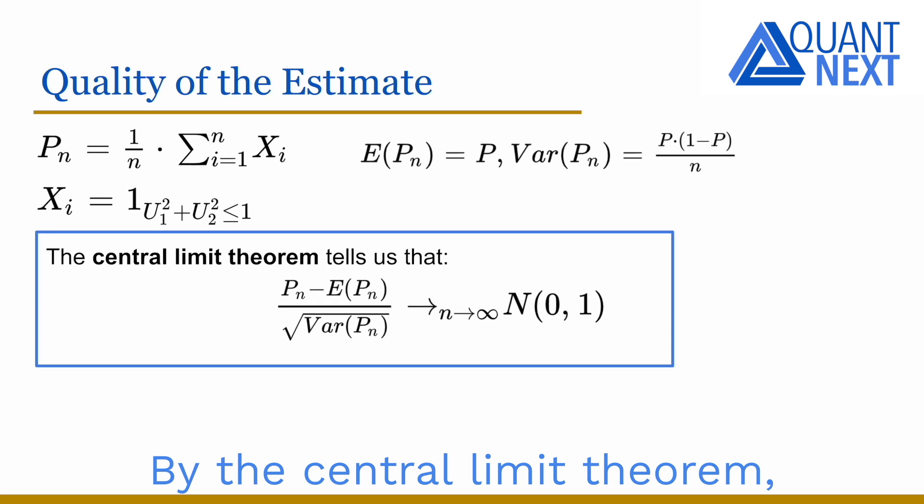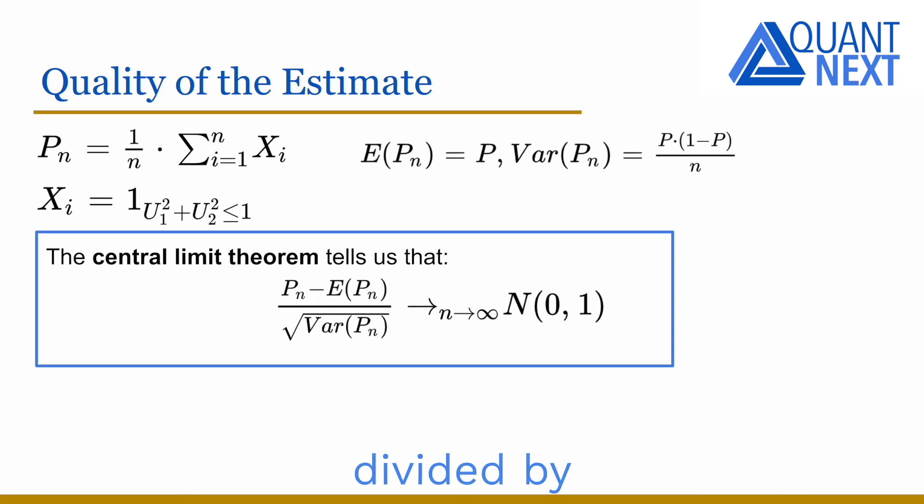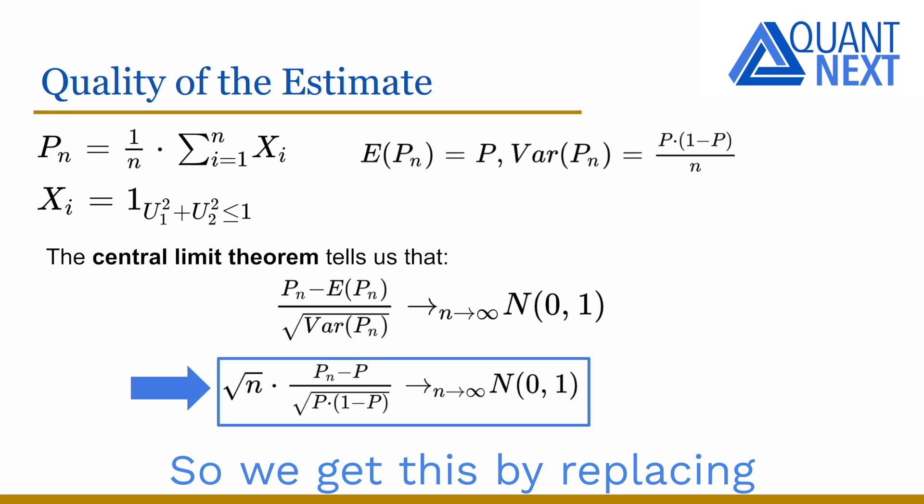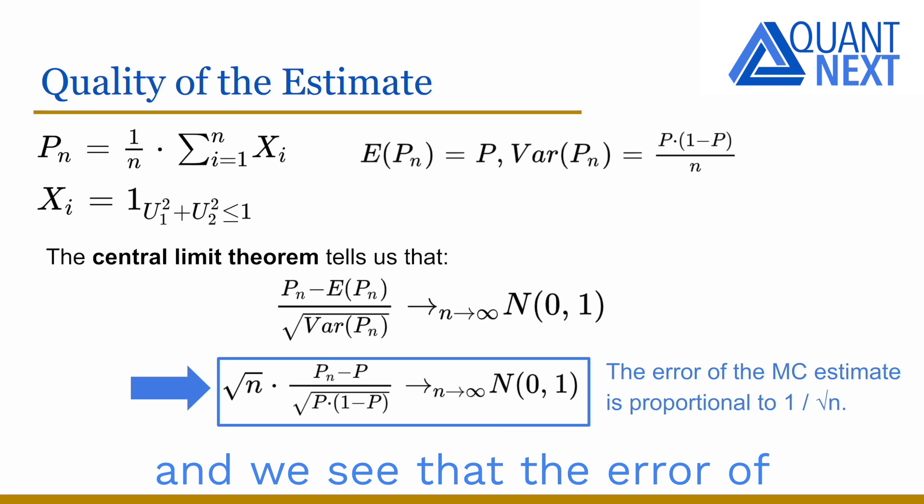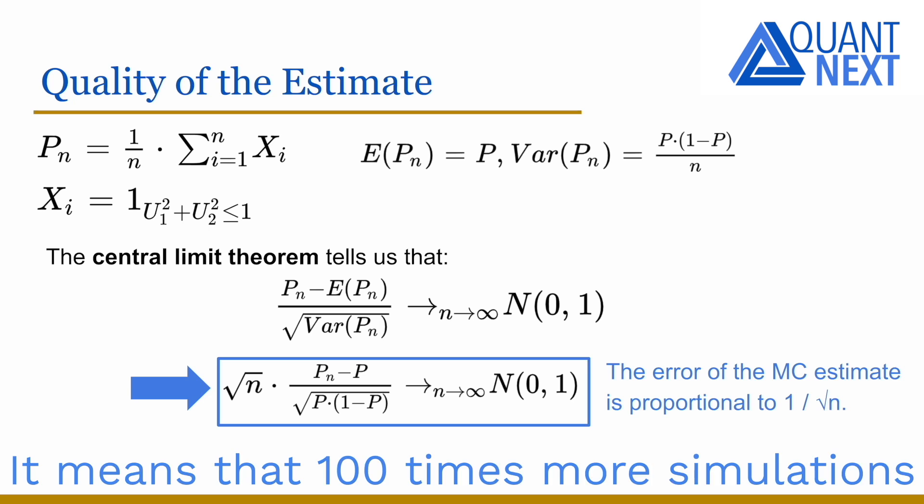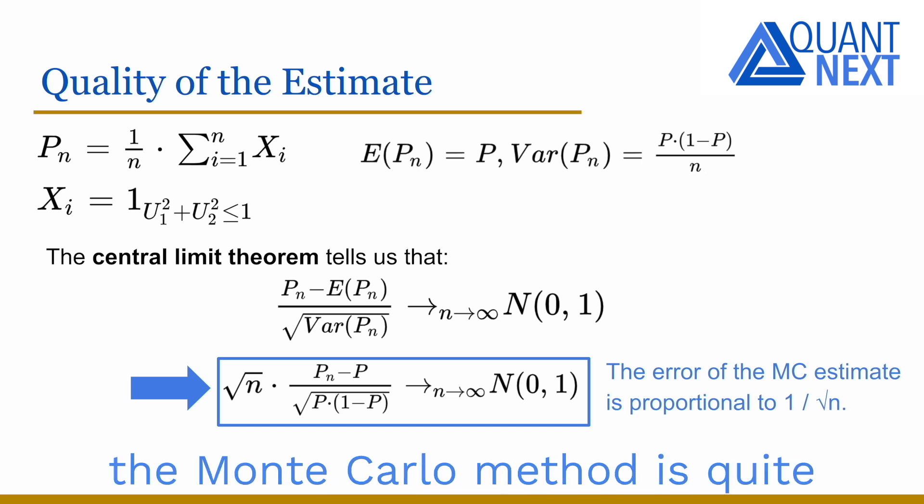By the central limit theorem, we know that pn minus its expectation divided by the square root of its variance tends to a standard Gaussian distribution when n tends to infinity. So we get this by replacing the expectation and variance of pn in the previous expression. And we see that the error of the estimate is proportional to one divided by the square root of n. It means that 100 times more simulations are required to improve by a factor 10 the accuracy of the estimate and it highlights that the Monte Carlo method is quite slow to converge.